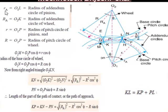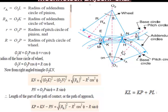In this figure you can see small r_a, denoted as O1L — it is the radius of addendum circle of the pinion. This is the pinion, this is the addendum circle, this is the dedendum circle, and this is the pitch circle. Capital R_a means O2K — it is the radius of addendum circle of the wheel. Small r is the radius of pitch circle of the pinion, and capital R (O2P) is the radius of pitch circle of the wheel.